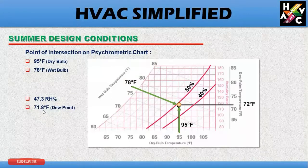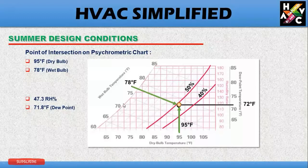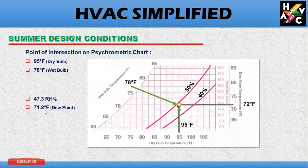71.85°F is your dew point. When you go to the left-hand side, this is your absolute humidity or dew point temperature, which means at 75.8 degrees Fahrenheit the condensation will start.